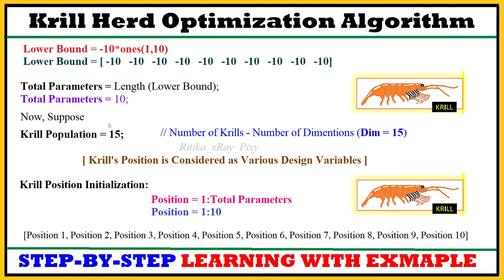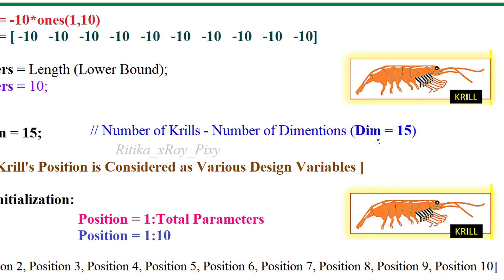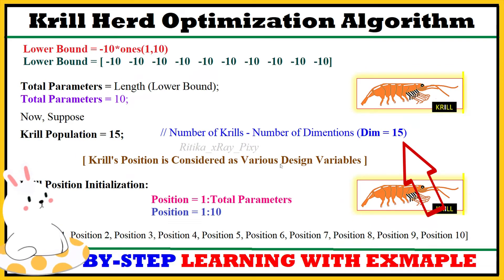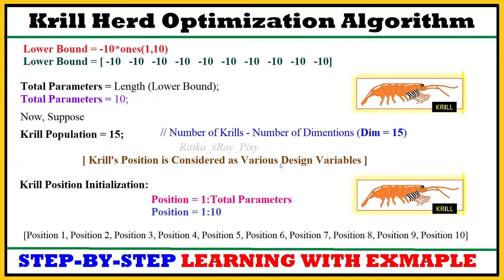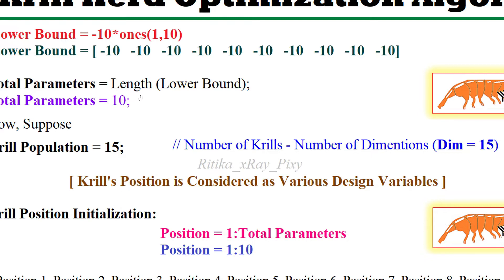Next, you can see the total number of parameters, which is the length of the lower bound. In Krill Herd Optimization, the krill's position is considered as the number of design variables, or the number of dimensions. We will consider the number of dimensions as the krill's position, and initialize those positions in the search space.